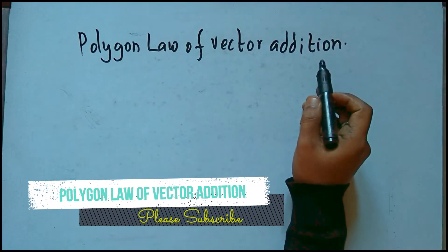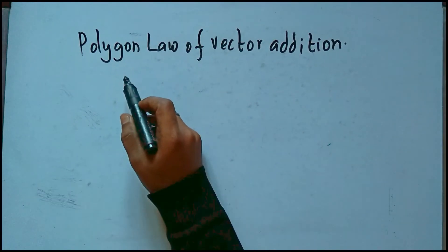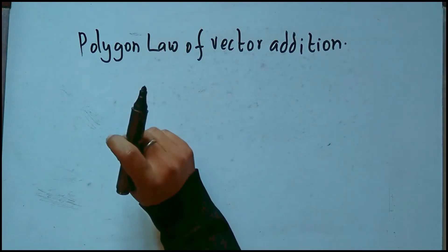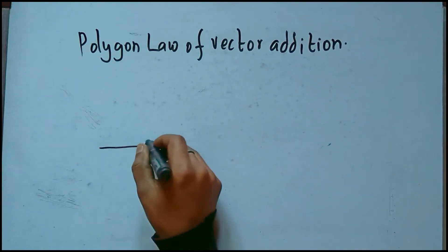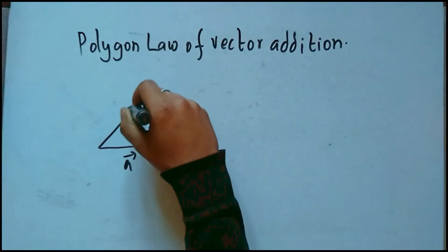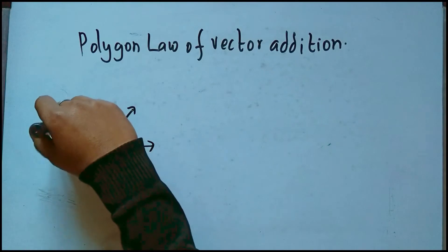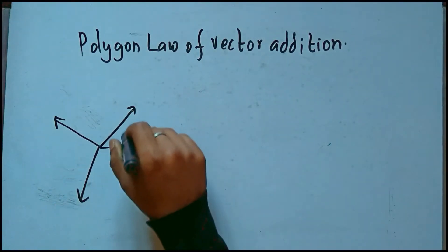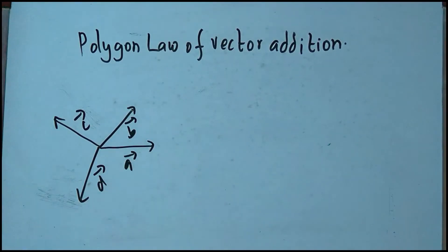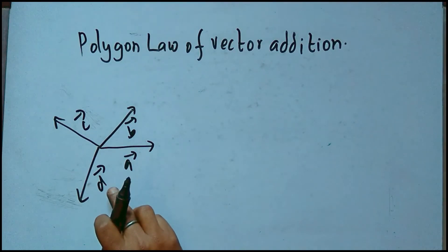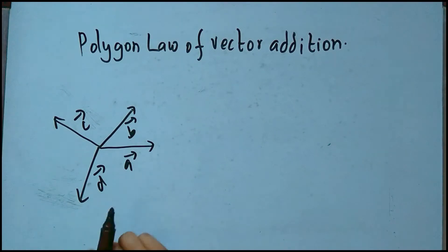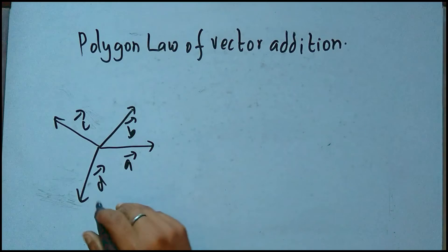What is the polygon law of vector addition? In triangle law and parallelogram law, we dealt with only two vectors. But what will happen if we deal with three vectors, four vectors, or many more vectors? Let's say we have vectors A, B, C, and D. Using triangle law and parallelogram law, we cannot directly find the resultant of these vectors.